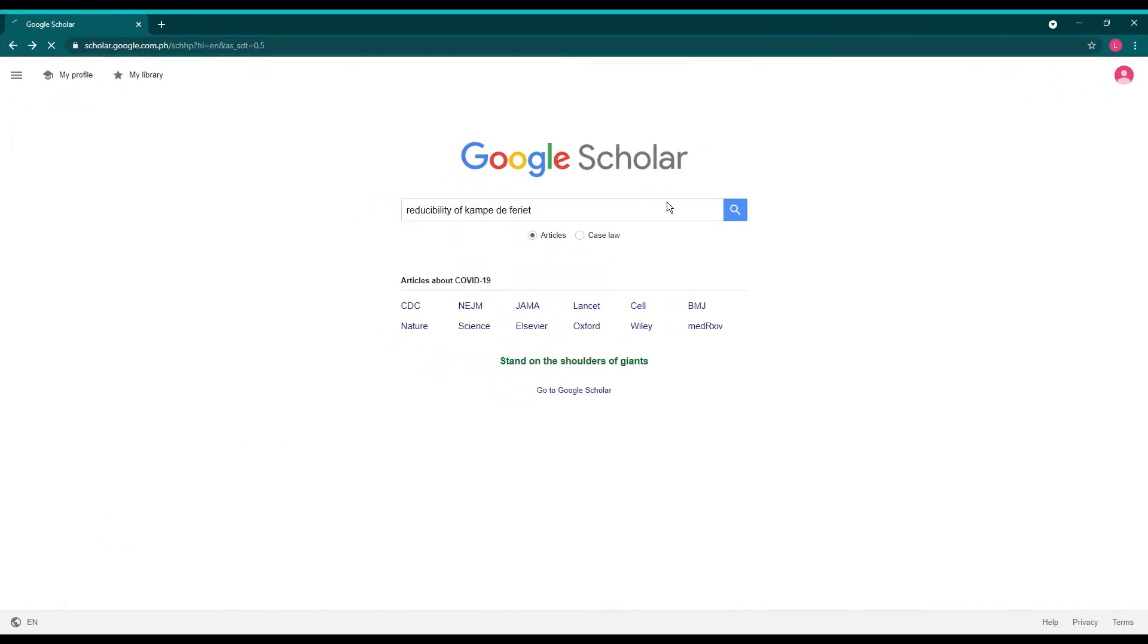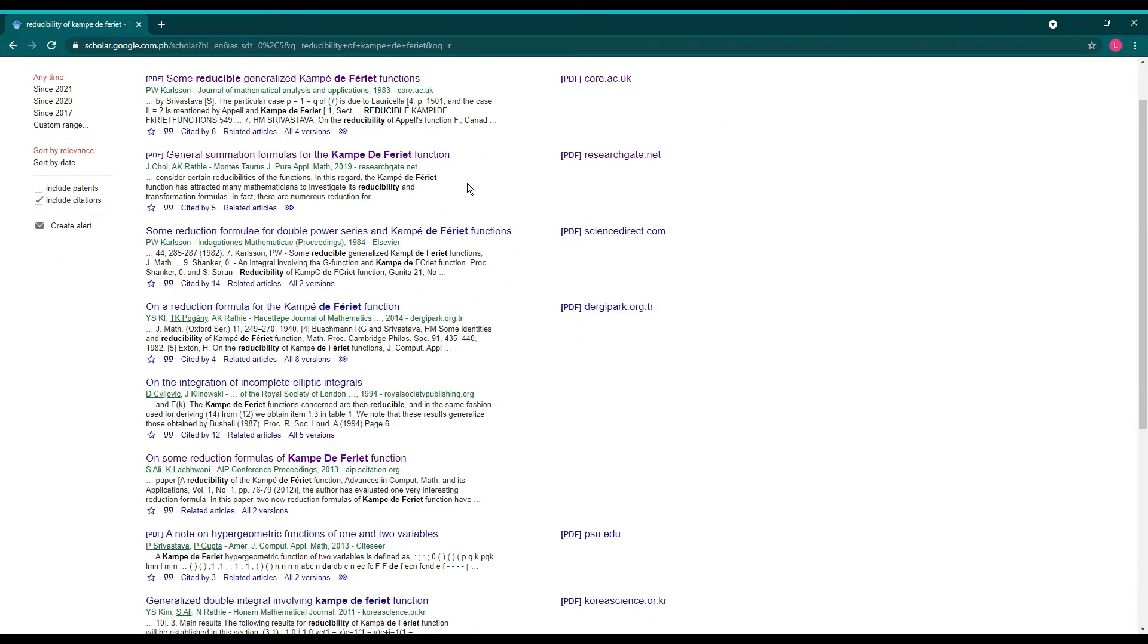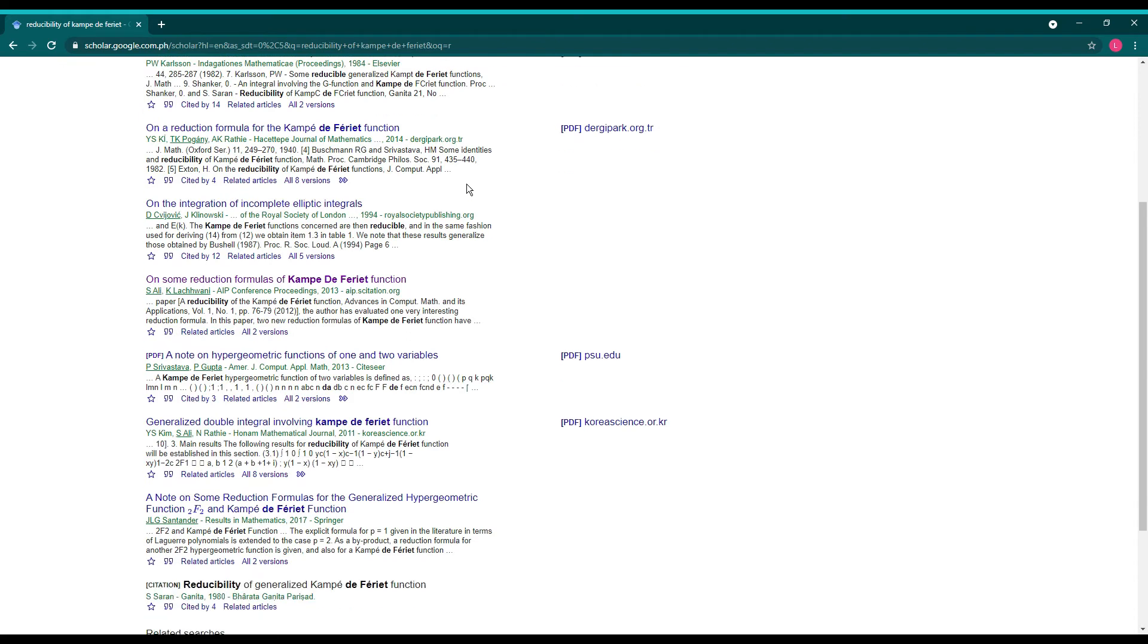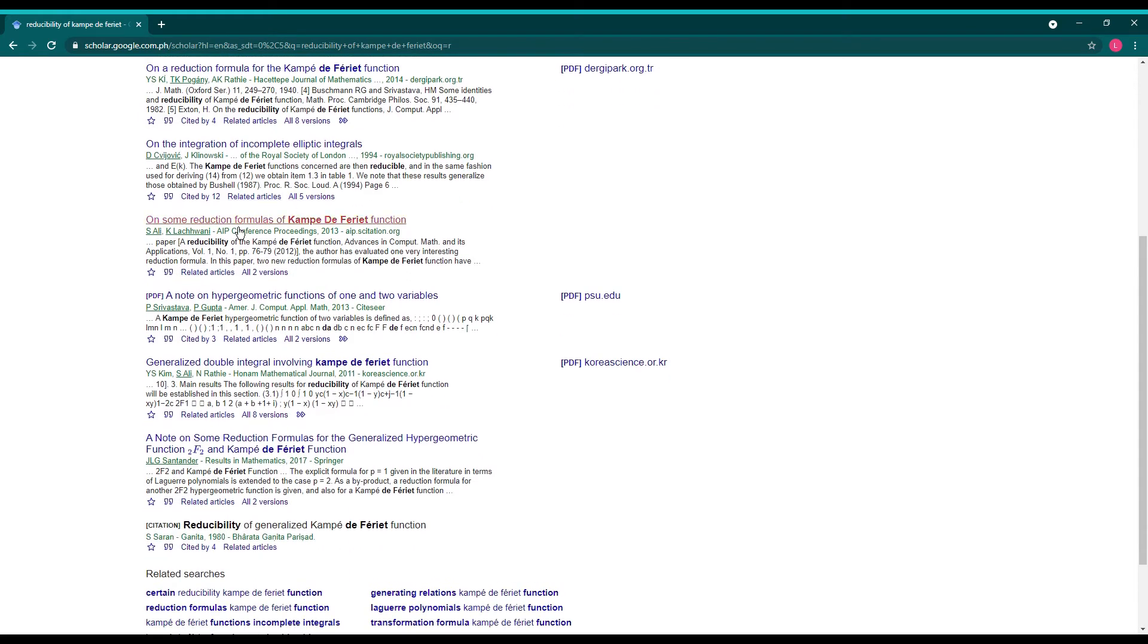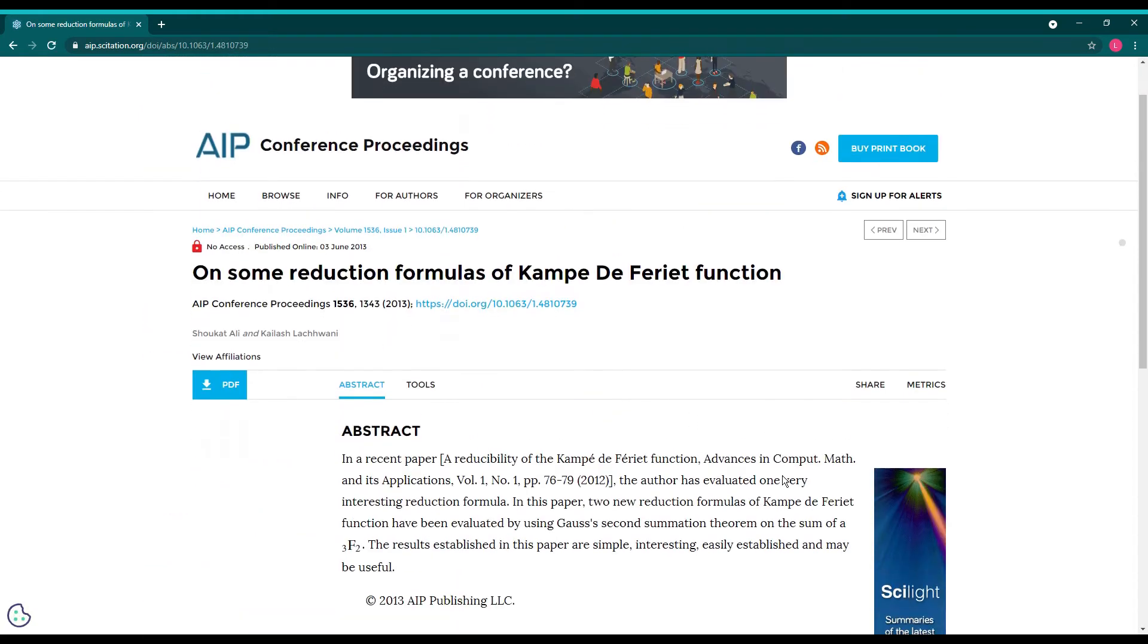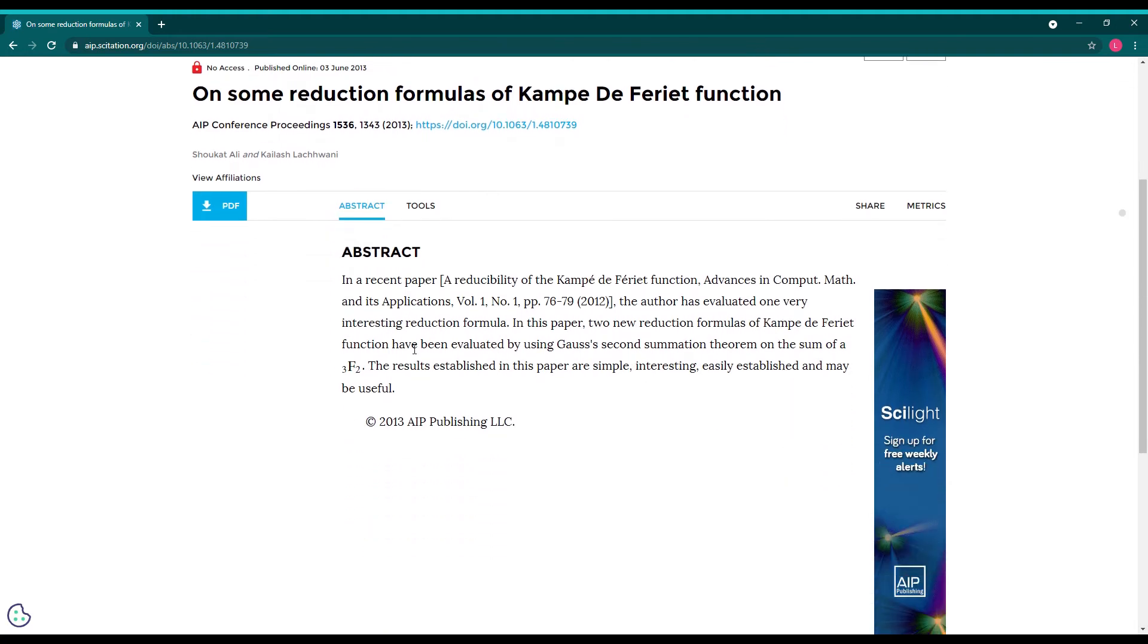Most papers generate the reduction formulas through the exploitation of theorems and identities of double summation. However, in this work, we tabulate reduction formulas of the Campé de Fériet function using the method of finite part integration.